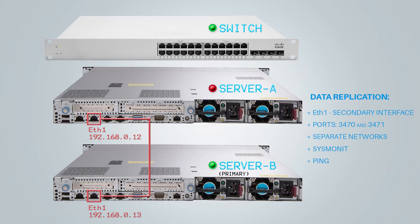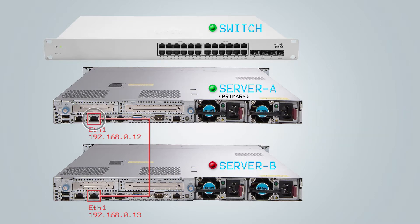Once you have replaced the hardware on server A, it becomes a secondary server and all data from the current primary server, server B, is replicated to server A. From this point forward, their roles will be switched. Server A will continue to ping server B, and if something happens to server B, server A takes over the primary role.